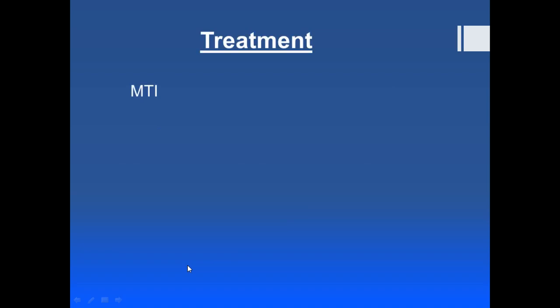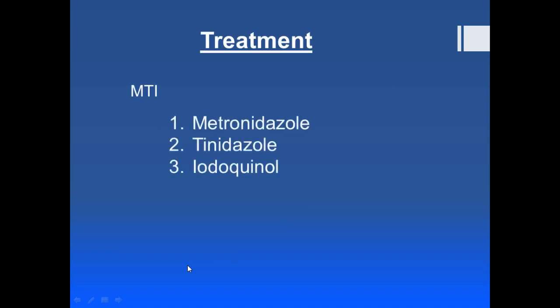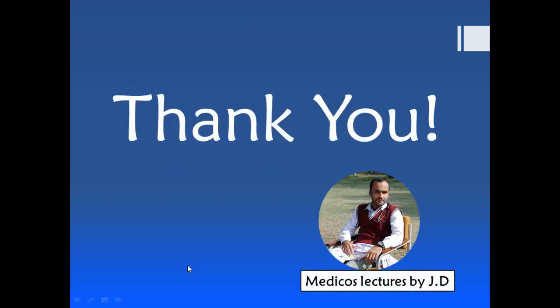The final topic is treatment. The infection of Entamoeba histolytica is treated with MTI — that is metronidazole, tinidazole, and iodoquinol. These three drugs are mainly used for its treatment. You can remember this by the mnemonic MTI. That was all about Entamoeba histolytica. Thank you very much and do subscribe to my channel for upcoming videos.